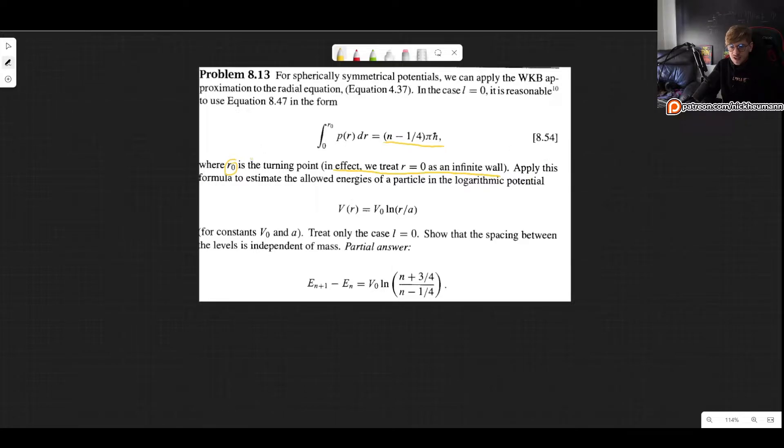We will apply this formula to estimate the allowed energies of a particle in the logarithmic potential, and with constants V0 and A we will treat only the case L equals zero, which is where this expression is valid, and we will show that the spacing between the levels is independent of mass.